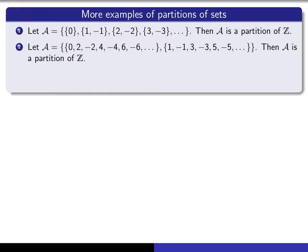Here's another example of a partition of the set of integers. This time it consists of two subsets: one is the set of even integers, the other is the set of odd integers. Clearly these two subsets have nothing in common, and their union is the entire set of integers. So that's a partition of the set of integers.